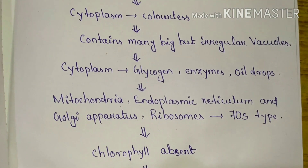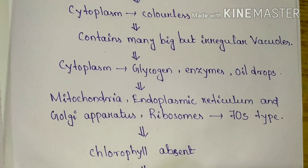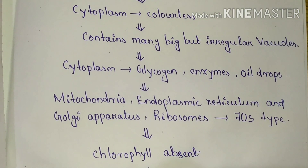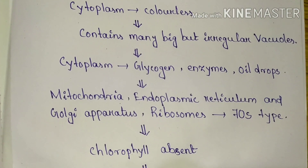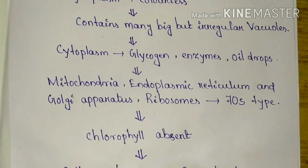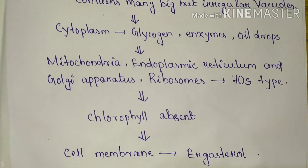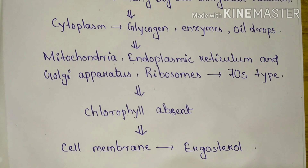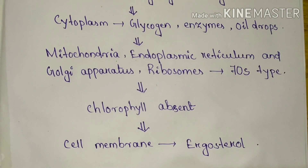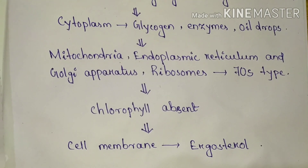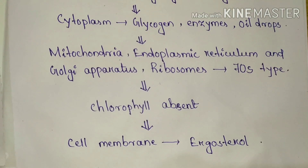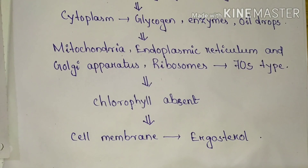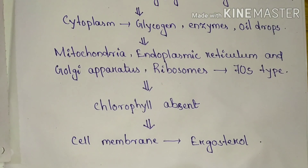As a eukaryotic cell, fungi contain various membrane-bound organelles including mitochondria, endoplasmic reticulum, Golgi apparatus, and ribosomes of the 70S type. Fungi lack chlorophyll, making them achlorophyllous organisms. The cell membrane contains ergosterol instead of cholesterol, as found in animal cells.